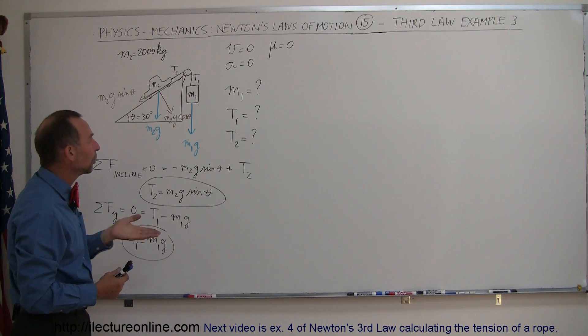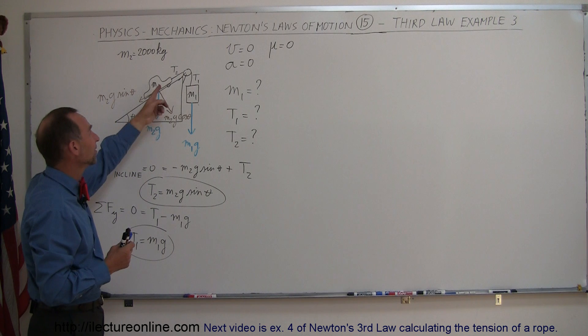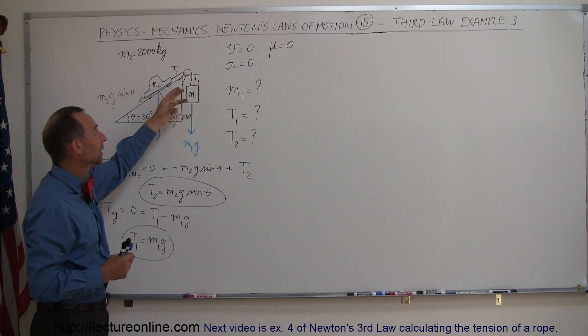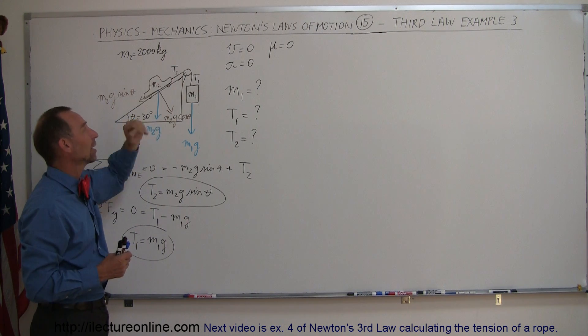The redirection by the pulley does not affect the tension at all, so we can say that since this is a continuous cable, that the tension on 1 must equal the tension on 2.